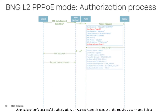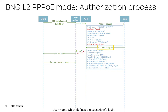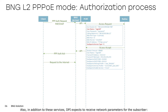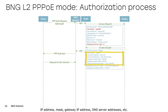Upon the subscriber's successful authorization, an access accept is sent with the required fields: the username which defines the subscriber's login, and a list of services and policing that are enabled for the subscriber. In addition to these services, DPI expects to receive network parameters for the subscriber — IP address, mask, gateway IP address, DNS server addresses, etc. All network parameters of the subscriber are transmitted using VSA.